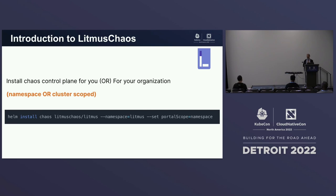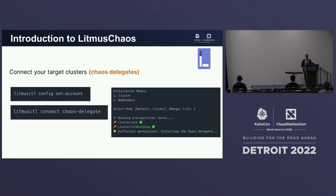There are multiple modes supported: namespaced mode and clustered mode. In namespace mode, Litmus allows you to orchestrate chaos in a specific namespace allotted to you as a developer. Or you could be the SRE setting up one control plane for all developers creating a self-service environment, installing it in cluster mode. Once you've got the control plane running, you're connecting different target environments into that control plane.